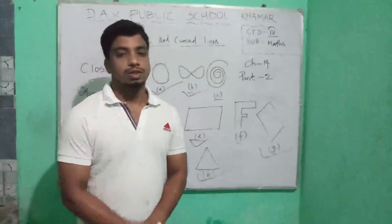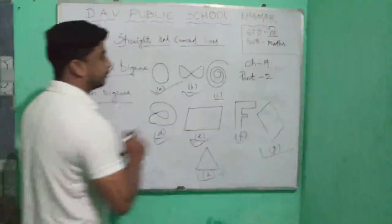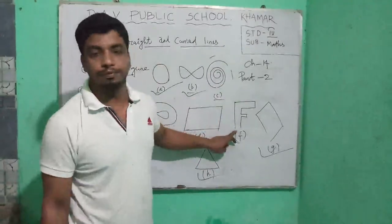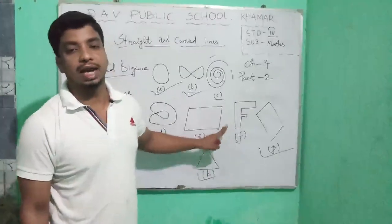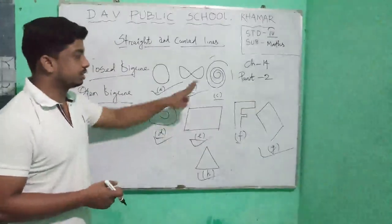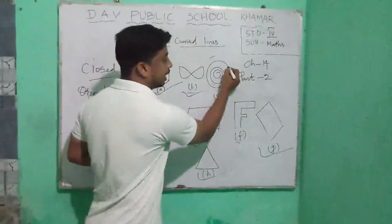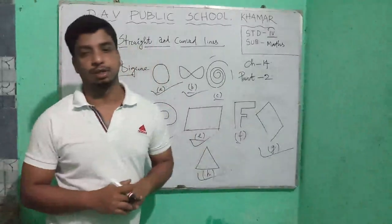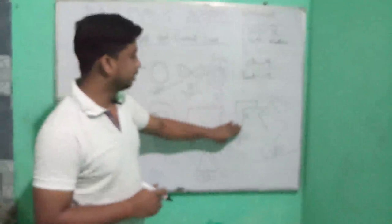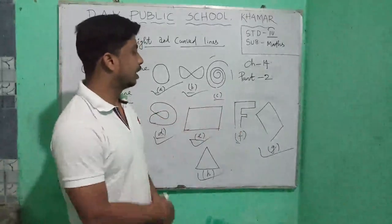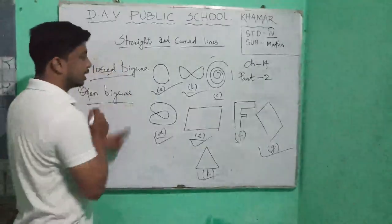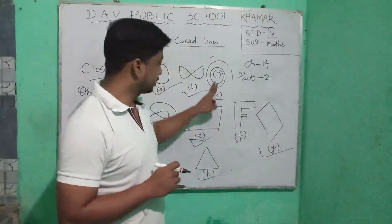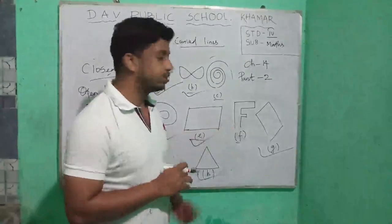Figures like C and F — look at the figure C and the figure F. These do not end at the starting point, so these are open figures. C and F are open figures. So closed figures are A, B, D, E, G, H, and C and F are open figures.